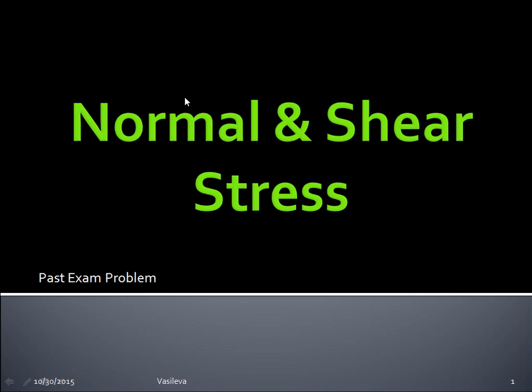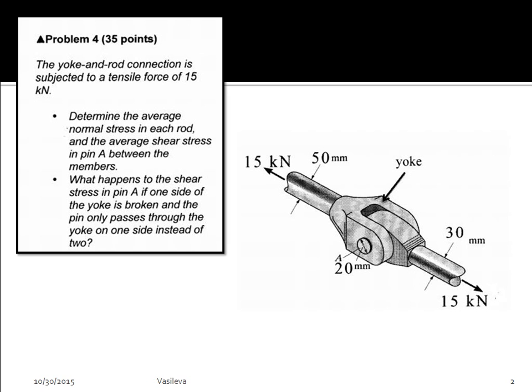Okay, so let's look at another example of normal and shear stress. This is a past exam problem worth 35 points, so this is a really good question to know how to answer. We have the yoke and rod connection subjected to a tensile force of 15 kilonewtons.